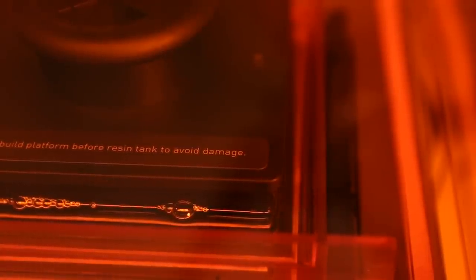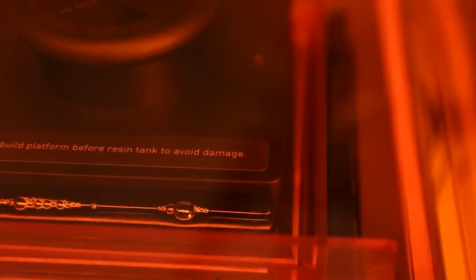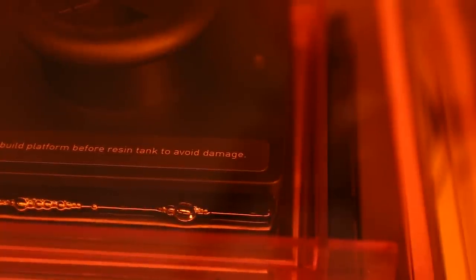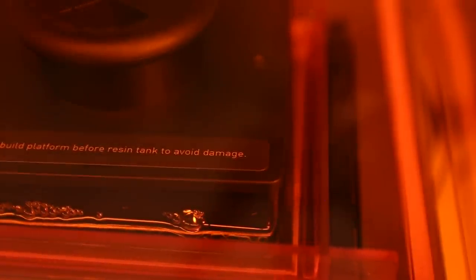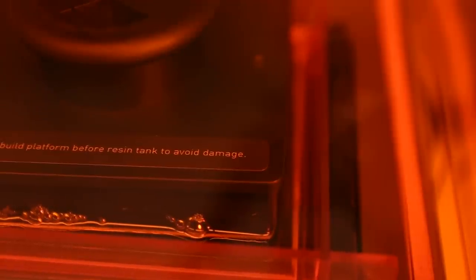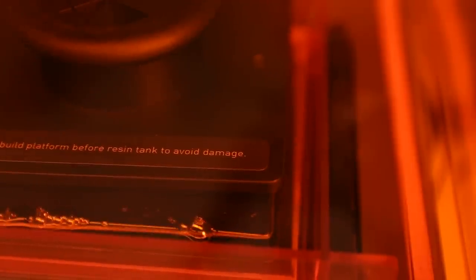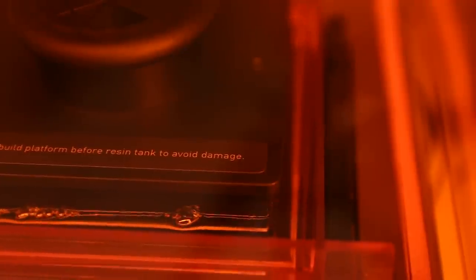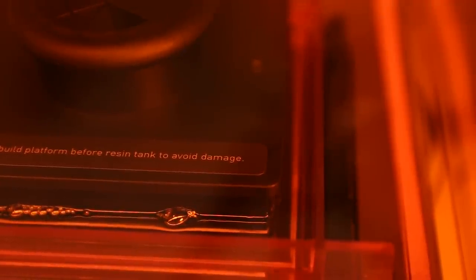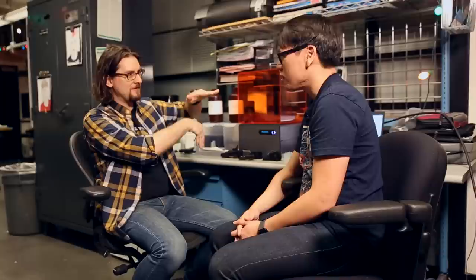And then because we're using clear, you might even be able to see the laser skittering around. And it's basically drawing the part, whatever happens to be. That cross section. The interesting thing with this is that when it draws it, it basically sticks to the bottom of the tank. So then it goes through a peel process where it tilts the whole tray and peels what you just printed off the bottom of it. Wow. Then the platform raises up to do the next layer. The tray goes back and it prints next. And it just keeps going through this peel. Yeah. Peels it.